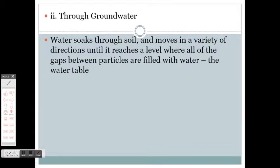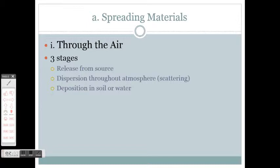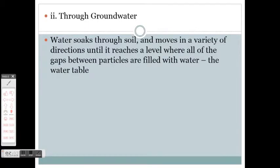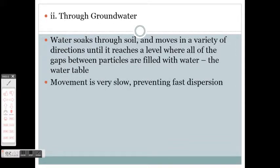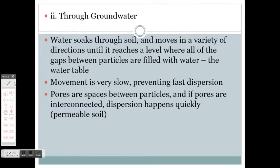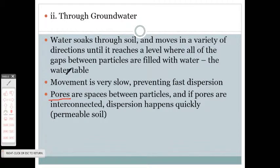The second way materials can spread is through groundwater. Water soaks down through the soil and moves in a variety of directions until it reaches a level where all the gaps between particles are filled with water — we call this the water table. Water does not move very fast through the ground, which prevents fast dispersion. Pores are spaces between particles, and if the pores are interconnected, dispersion happens more quickly, though it still takes time.